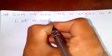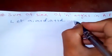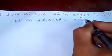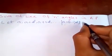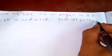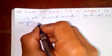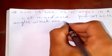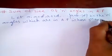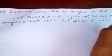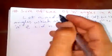Let the angles in AP be: A, A plus D, A plus 2D, and so on up to n times, which is A plus (n minus 1)D. These are the angles which are in AP. The first term is A, and the common difference is D.